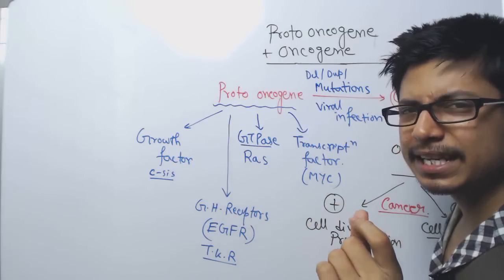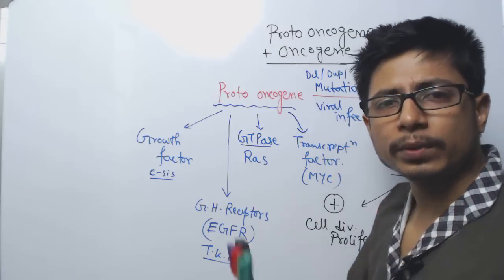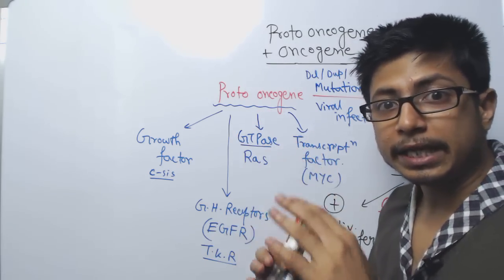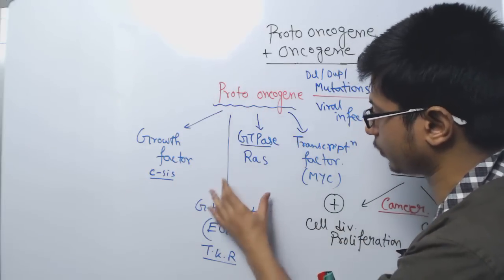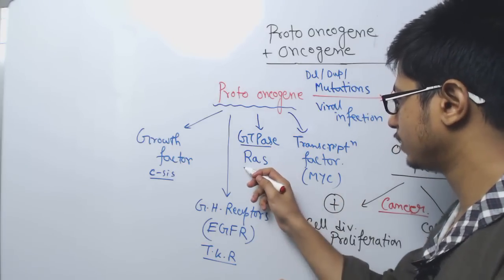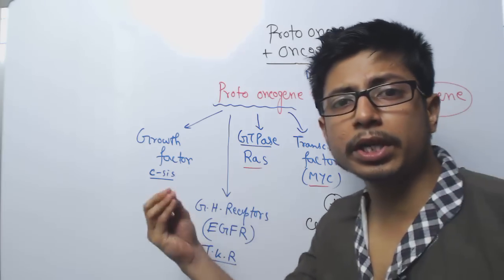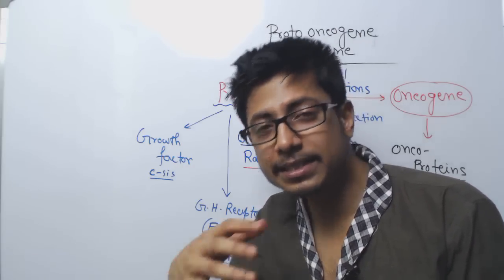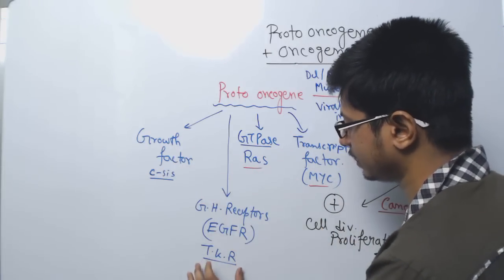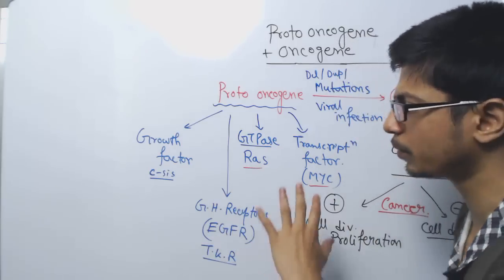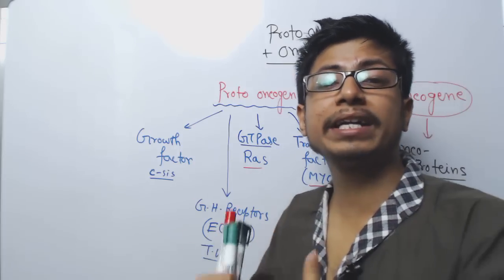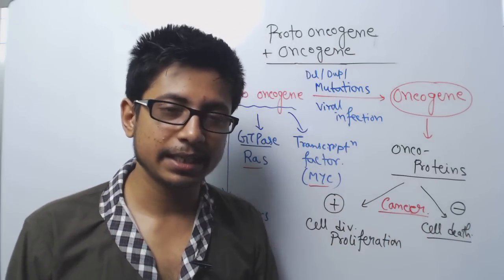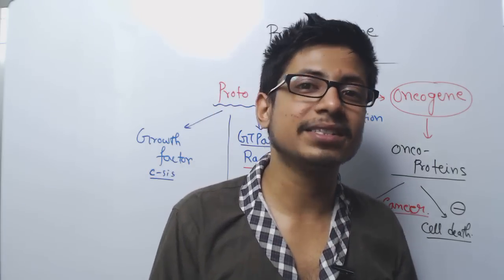If any problem occurs with proto-oncogenes, there will be issues with cell growth and differentiation. Imagine if, due to some mutation, the proto-oncogene products — RAS, EGFR, MYC, CSFs — are expressed in excess inside the cell. This excess amount will help the cell grow and divide much more rapidly and will not allow the cell to die, which can turn the cell into a cancerous type.